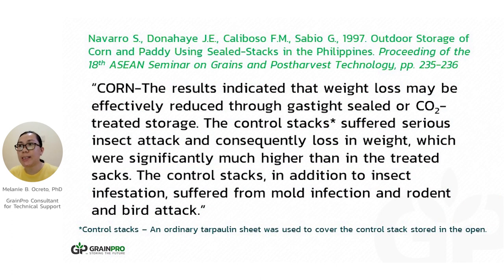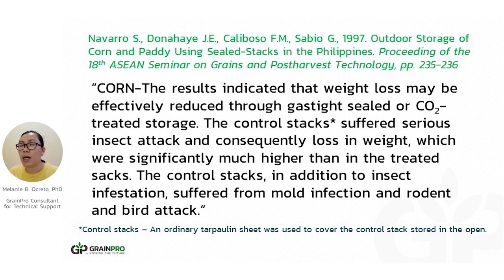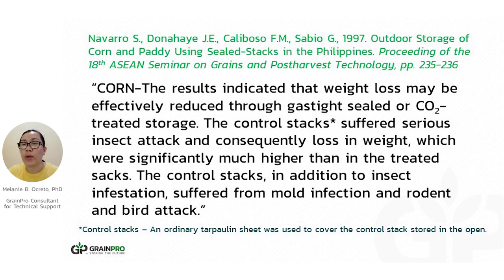For corn, studies compare the hermetic treatment to a control stock stored under ordinary tarpaulin. With the control stock, there was a serious insect attack, resulting in loss in weight and quality. But with corn stored in gas-tight or sealed treatment, the weight loss was prevented. These results provide evidence that hermetic storage and proper drying are very important to preserve quality, prevent qualitative losses, and in return also prevent and avoid economic losses.